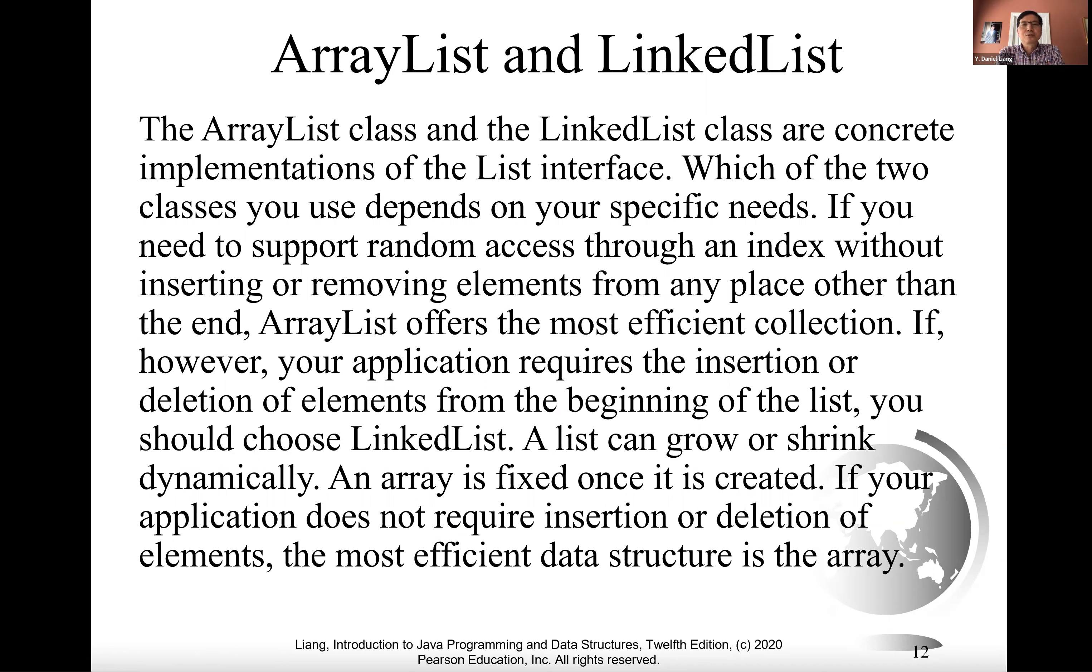We have two types of lists under the list interface. One is the ArrayList and the other is the LinkedList. The ArrayList class and LinkedList class are concrete implementations of the list interface. Which of the two classes you use depends on your specific needs. If you need to support random access through an index without inserting or removing elements from any place other than the end, ArrayList offers the most efficient collection.